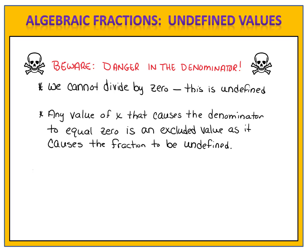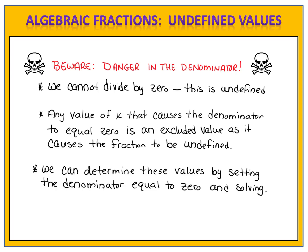How do we determine the values that cause an algebraic fraction to become undefined? Very simple. We determine these values by setting the denominator equal to zero and solving to see the values that cause that denominator to be zero. Let's take a look at a few examples so you can see what I mean.